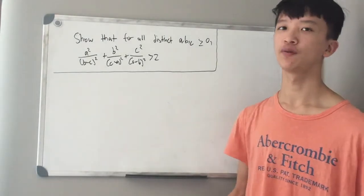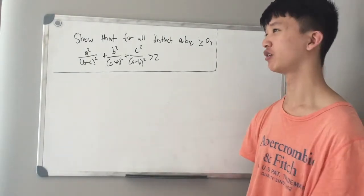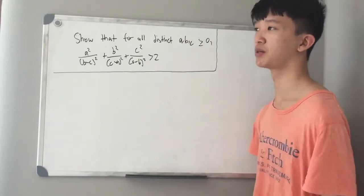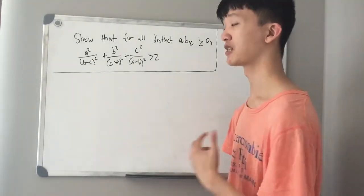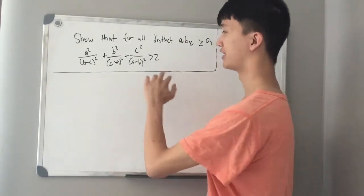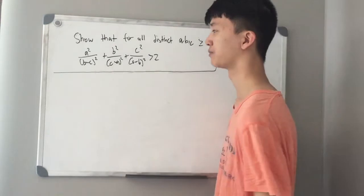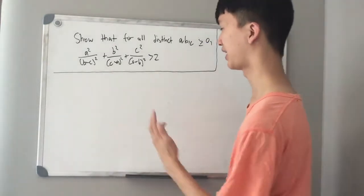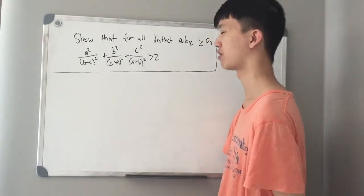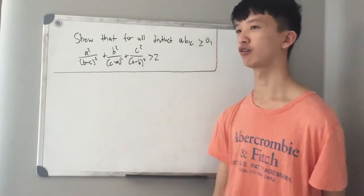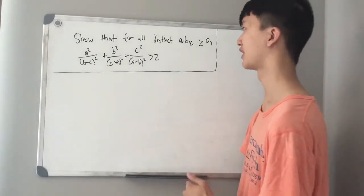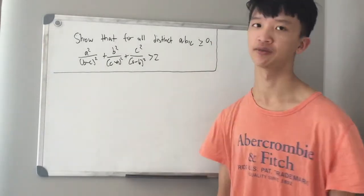For those of you who have been watching my channel for a while, I actually made a video on this earlier, but I included a really simple solution. My solution was to notice that as c approaches 0, this is minimized, and so we can apply AM-GM to a squared over b squared plus b squared over a squared is strictly greater than 2, then cancel out the equality case by assuming that a and b are distinct.